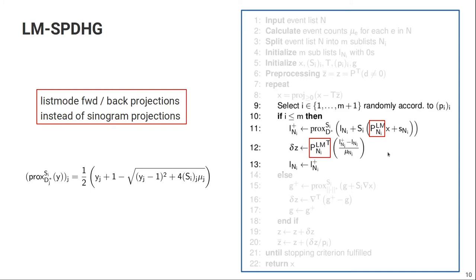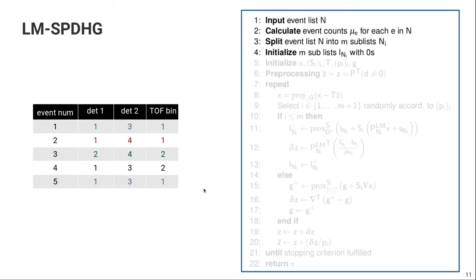But we also have to see that in the proximal map, we still need the event multiplicity. So I call it nu_j, and the multiplicity is actually the number of times an event occurs in the event list. And calculating that event multiplicity has to be done in a preprocessing step. So we have a bit of overhead in the beginning.